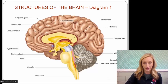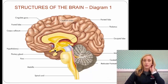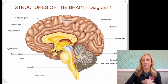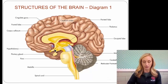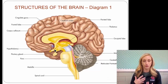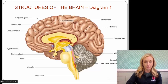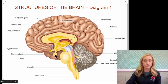Under the thalamus is the hypothalamus — hence 'under the thalamus.' The hypothalamus controls all of our innate drives: hunger, thirst, sex — all of those drives. The pituitary gland, located under the hypothalamus, is this little dot here. We know what the pituitary gland is — it controls the endocrine system.